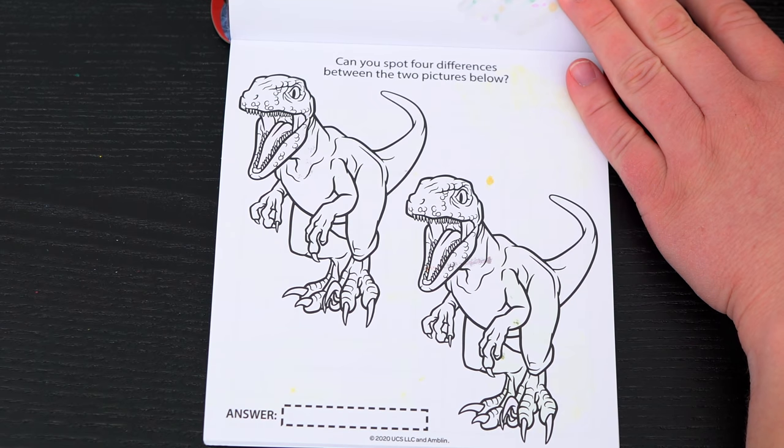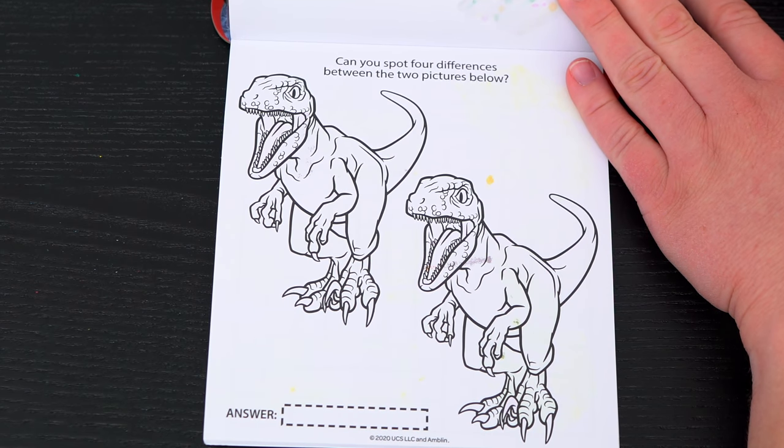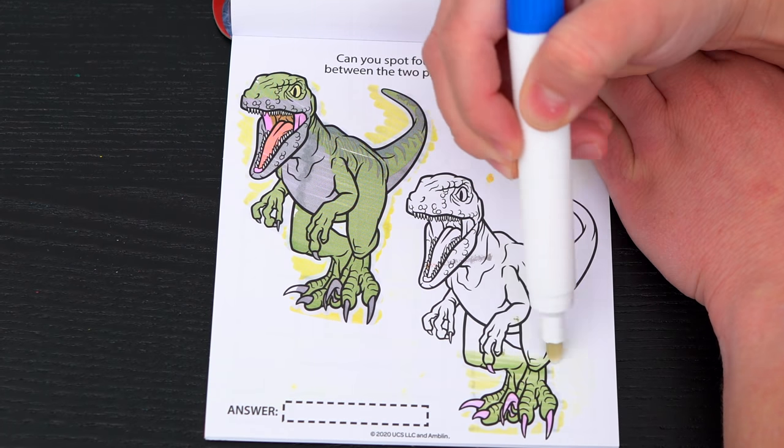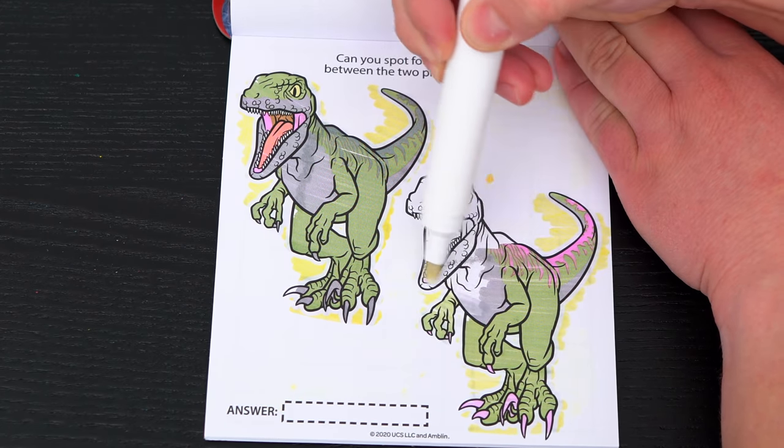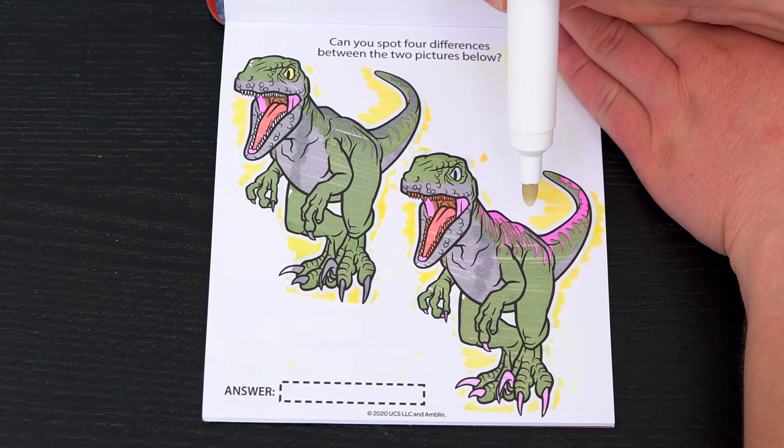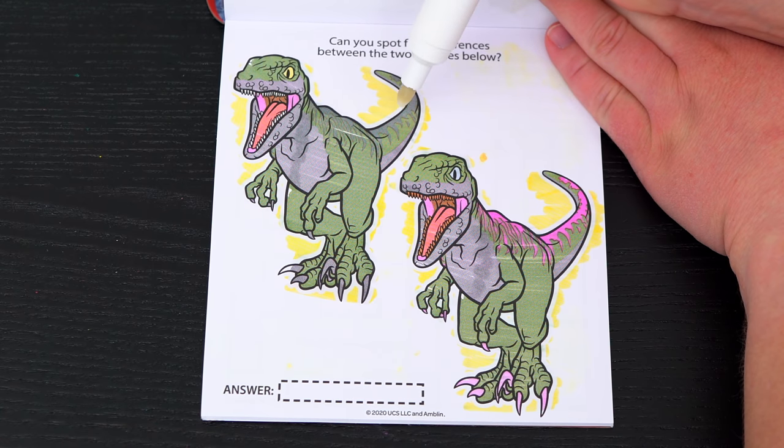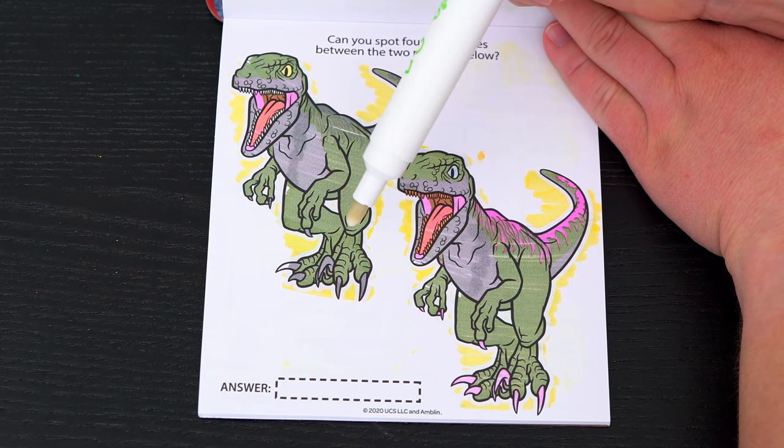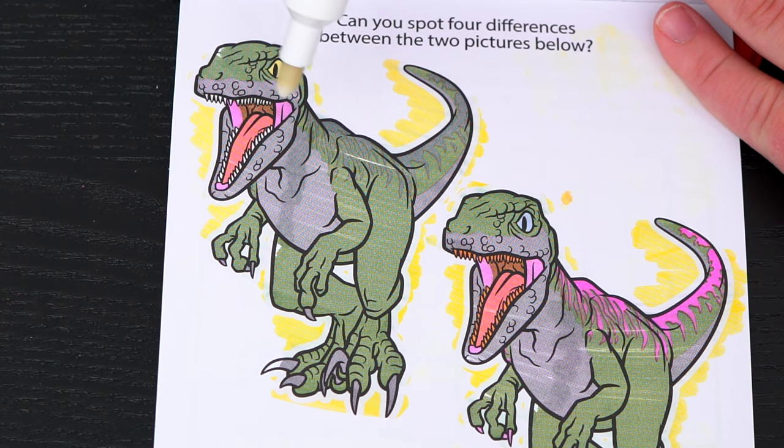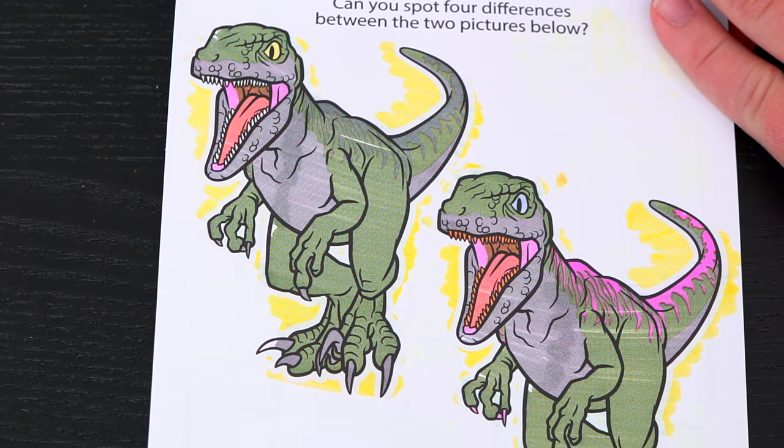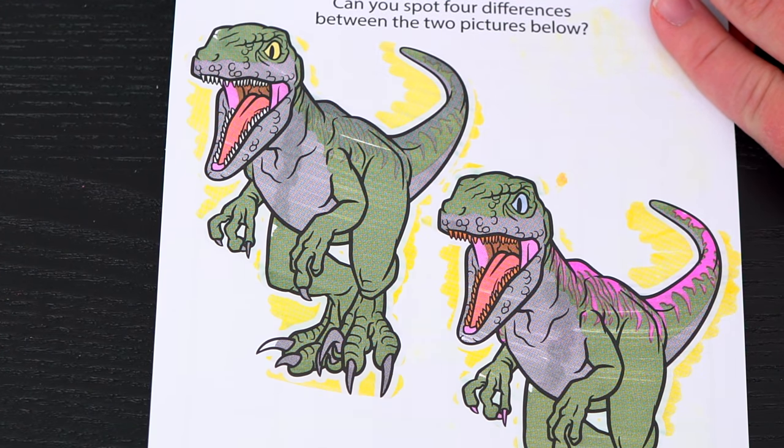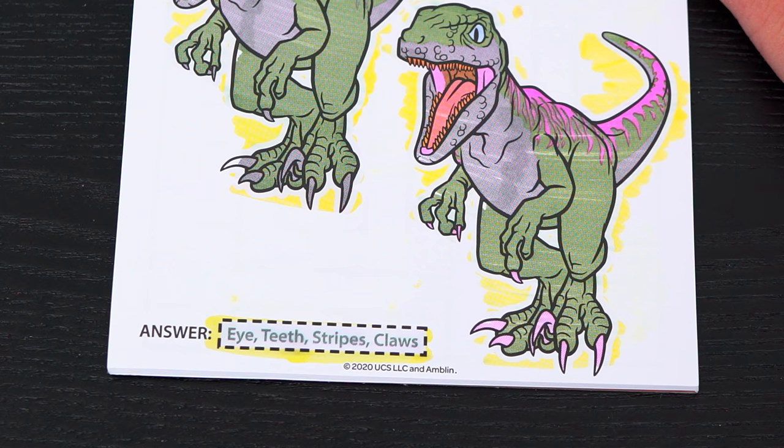Can you spot four differences between the two pictures below? Okay, so the first difference I see is this dinosaur has pink markings, but this one has gray! And look, the claws are also different colors! That's two! Oh, and if you look closely, this dinosaur has brown teeth, but this one has white! We just need to find one more! Oh, look! Their eyes are different colors! That's four! Yay! We found all the differences!